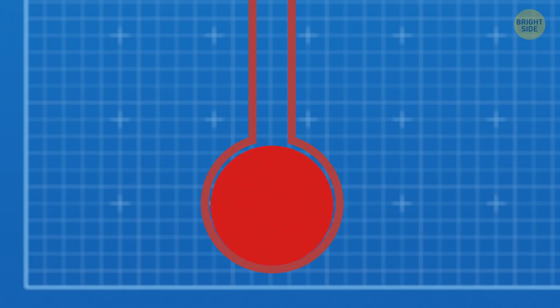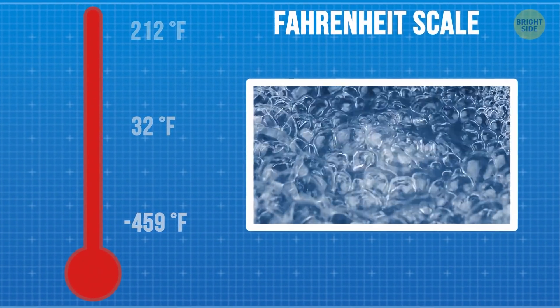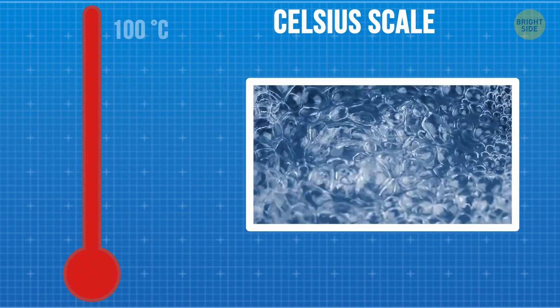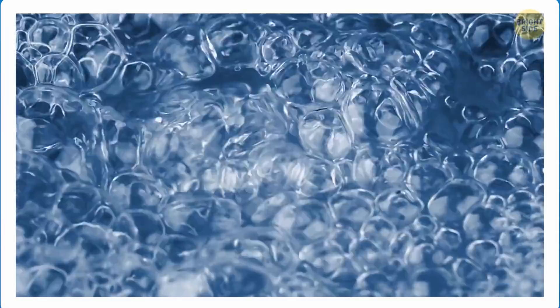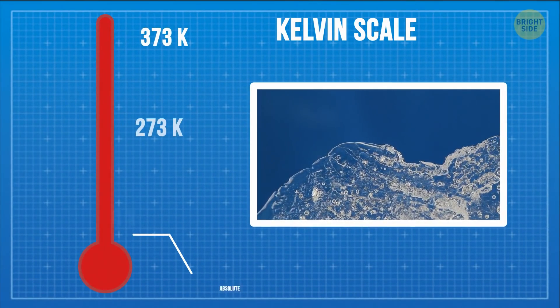Temperature can be measured three different ways. In degrees Fahrenheit, where water freezes at 32 degrees and boils at 212. In degrees Celsius, where water freezes at 0 degrees and boils at 100 degrees. But neither of these thermometers have a starting point.